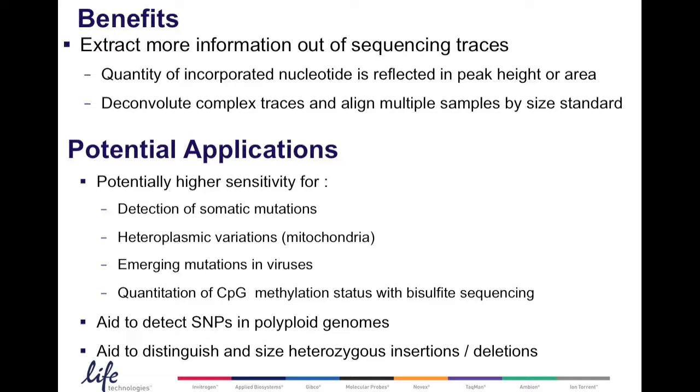The potential applications are: it allows you to get higher sensitivity for detection of somatic mutations, and I will show you an example for that. It will probably also allow you to detect heteroplasmic variations in mitochondrial genomes. It may also help you to detect emerging mutations in viruses. It may allow you to quantitate the CpG methylation status using bisulfide sequencing, and I will show you an example for that. Furthermore, it may also aid to detect SNPs in polyploid genomes and distinguish and size heterozygous insertions and deletions.